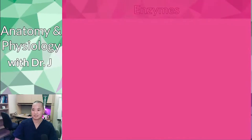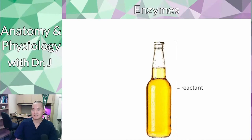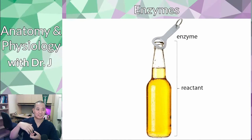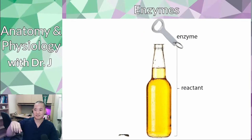Most enzymes are proteins — not all, but at this stage you can think of them as special proteins. An enzyme makes it easier to go from the reactants to the products. You can open a bottle with your bare hand using a lot of force and energy, but if you have something that gives you a mechanical advantage — like a bottle opener — you use leverage. It fits onto the reactant and pops it off to form the products.